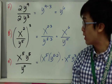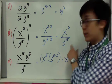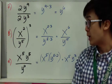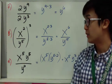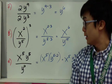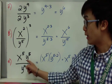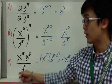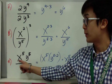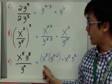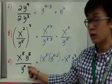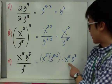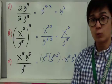You cannot apply any other law at this point because they have different variables. For number 9, we have x to the fifth times y to the fifth, all over y squared. Since there is no x in the denominator, we only simplify y — I copy x to the fifth and subtract 5 and 2 using the law of exponents. So the simplest form is x to the fifth times y cubed.